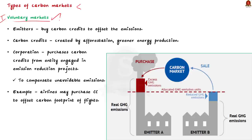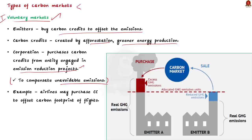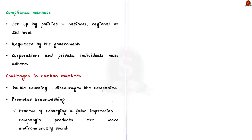In voluntary markets, emitters such as corporations and private individuals buy carbon credits to offset their emissions. Carbon credits are created by activities such as afforestation and greener energy production because these activities reduce CO2 from the air. A corporation purchases carbon credits from an entity engaged in projects that reduce, remove, capture or avoid emissions — for example, airlines in the aviation sector may purchase carbon credits to offset the carbon footprint of flights they operate. Compliance markets, on the other hand, are set up by policies at the national, regional or international level and are officially regulated by the government. Corporations and individuals must adhere to the principles put forward by the government.